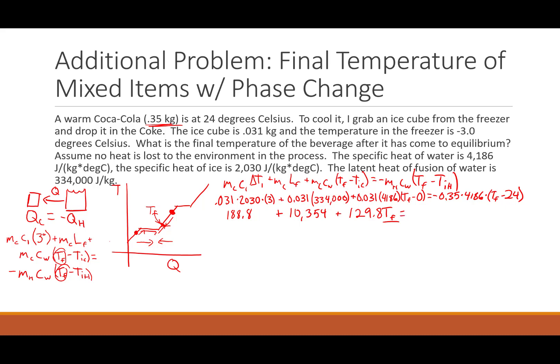Equals negative, well, 0.35 times 4186. I'm getting negative 1,465 times T final minus 24. Okay, well let's simplify this. I'm going to group these constant terms. I'll add them up. 188.8 plus 10,354 gives me 10,542 plus 129.8 T final. And then equals negative 1465 T final. And that times 24, 1465 times 24, it's going to be a negative times a negative is a positive, so plus 35,160.